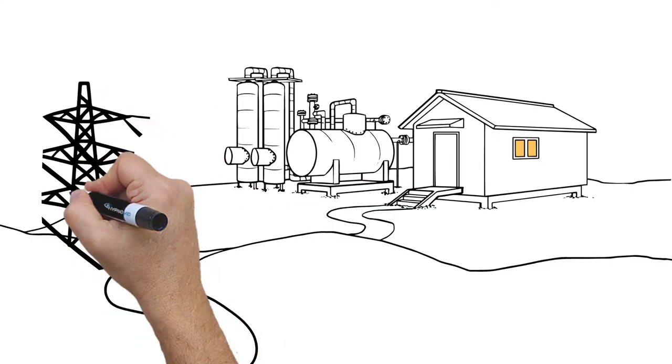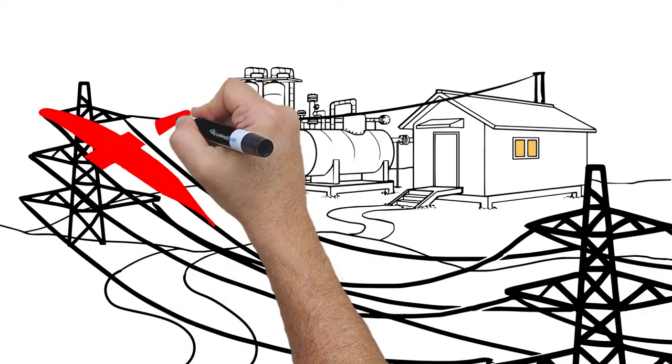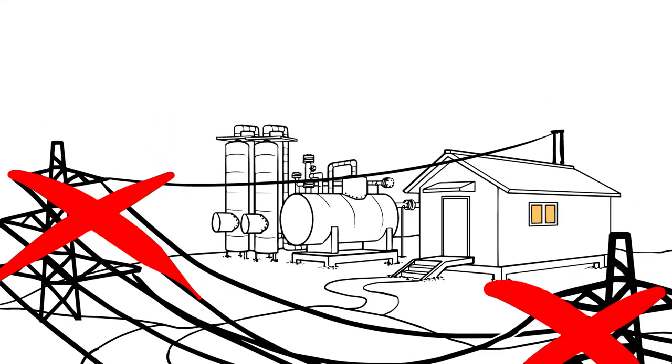Getting power to a remote well or facility is a challenge, no matter what currently popular method you choose. Running power lines across remote areas is very expensive, approximately $150,000 to $200,000 per mile.